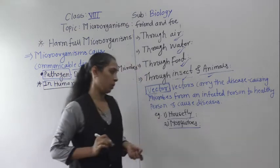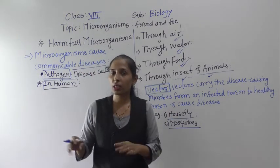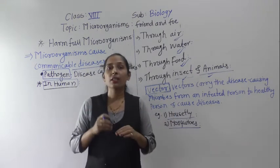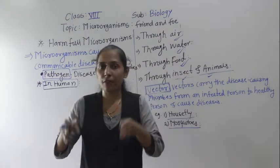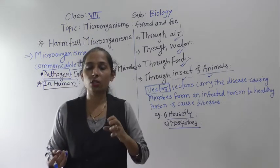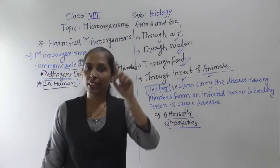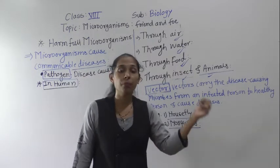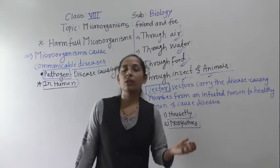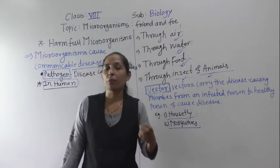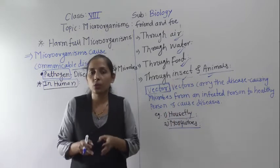House flies are an example of a vector. House flies sit everywhere — on rubbish and on food materials alike. When a house fly sits on waste material, the germs present there get stuck to its legs and mouth. When that same house fly then sits on food, it releases all those germs onto the food. If we consume that food, we suffer from various diseases.